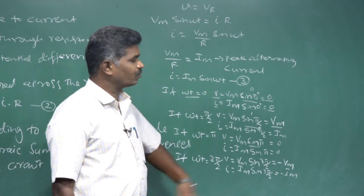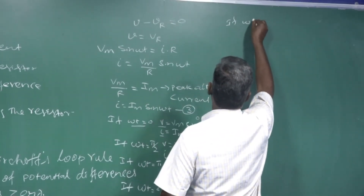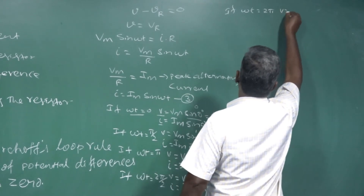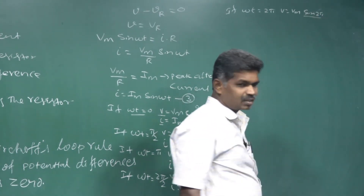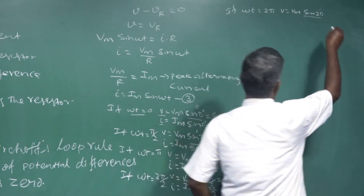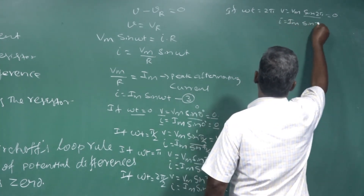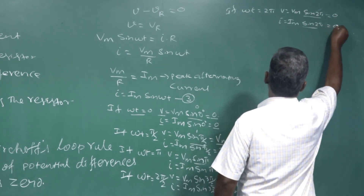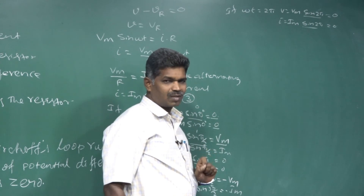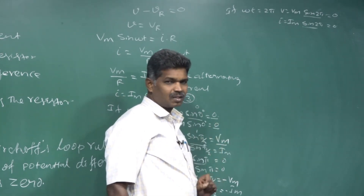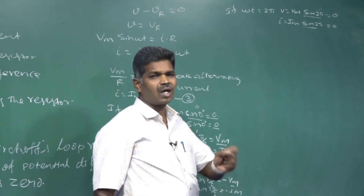One more angle: ωt = 2π. V = VM sin(2π) - since sin(360°) = sin(0°) = 0, the instantaneous voltage is zero. Similarly, I = IM sin(2π) = 0. So instantaneous current is also zero. Based on all these values substituted into our equations, we are going to draw a waveform diagram to show the phase relationship.